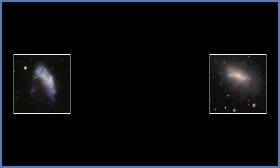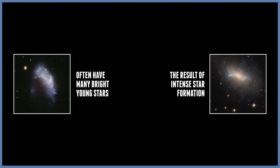Irregular galaxies are simply more chaotic. They can often be very bright, they can have young stars, and therefore they have recent bursts of star formation. But again, irregular galaxies can just be known as a galaxy that isn't quite spiral but isn't quite elliptical either.